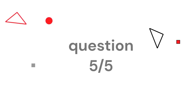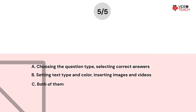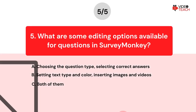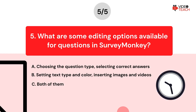Question number five. What are some editing options available for questions in SurveyMonkey? Option A: Choosing the question type, selecting correct answers. Option B: Setting text type and color, inserting images and videos. Option C: Both of them. Now you have about 15 seconds to think about your answer.